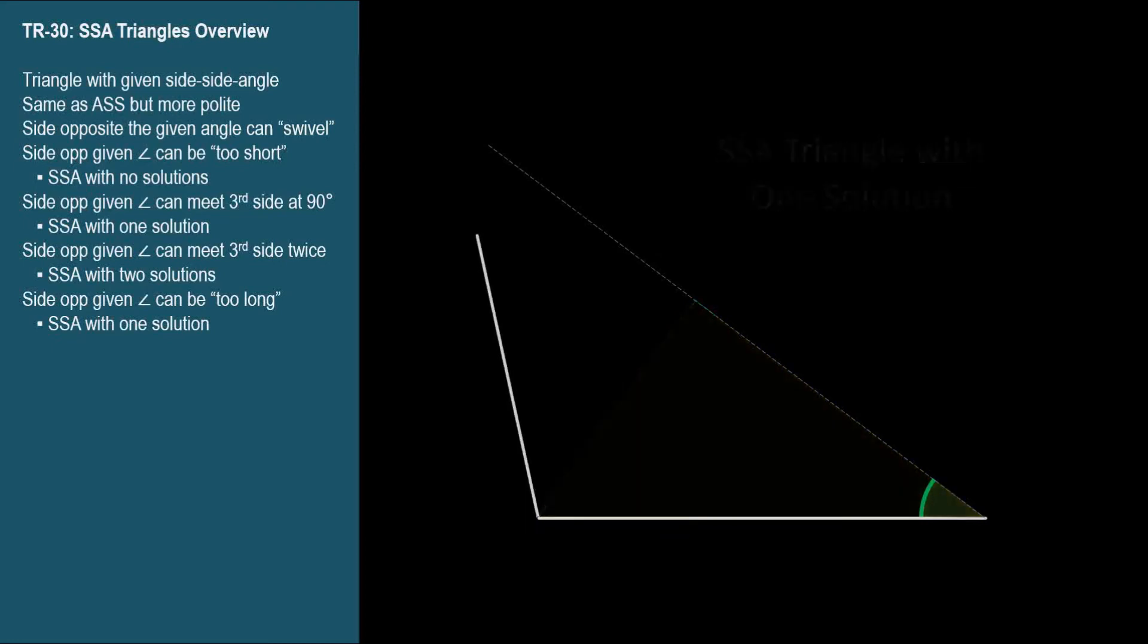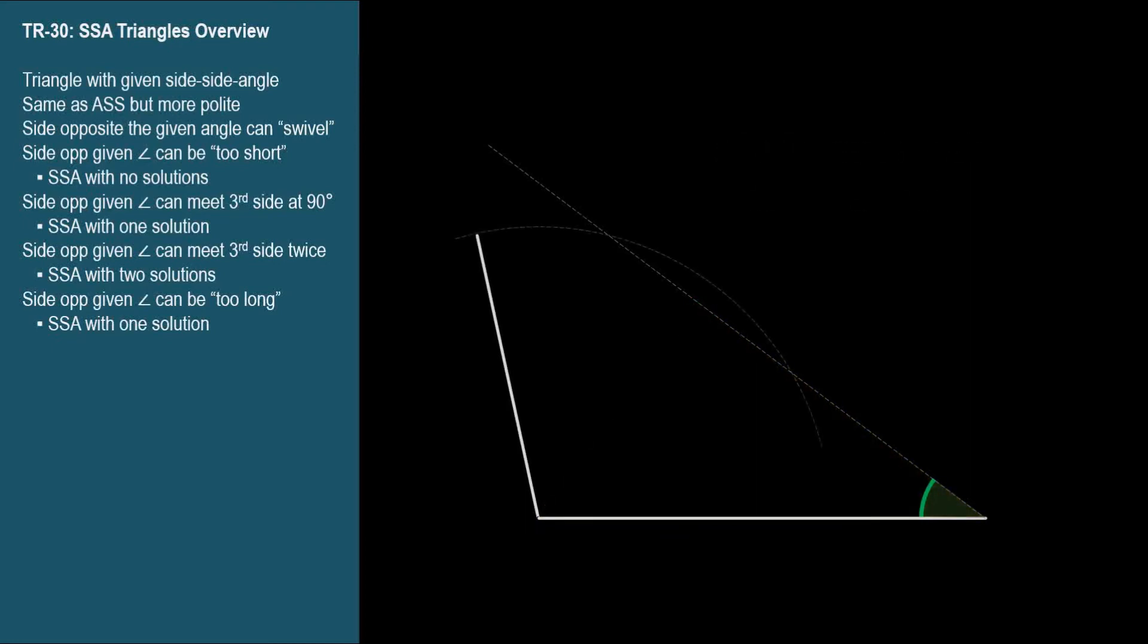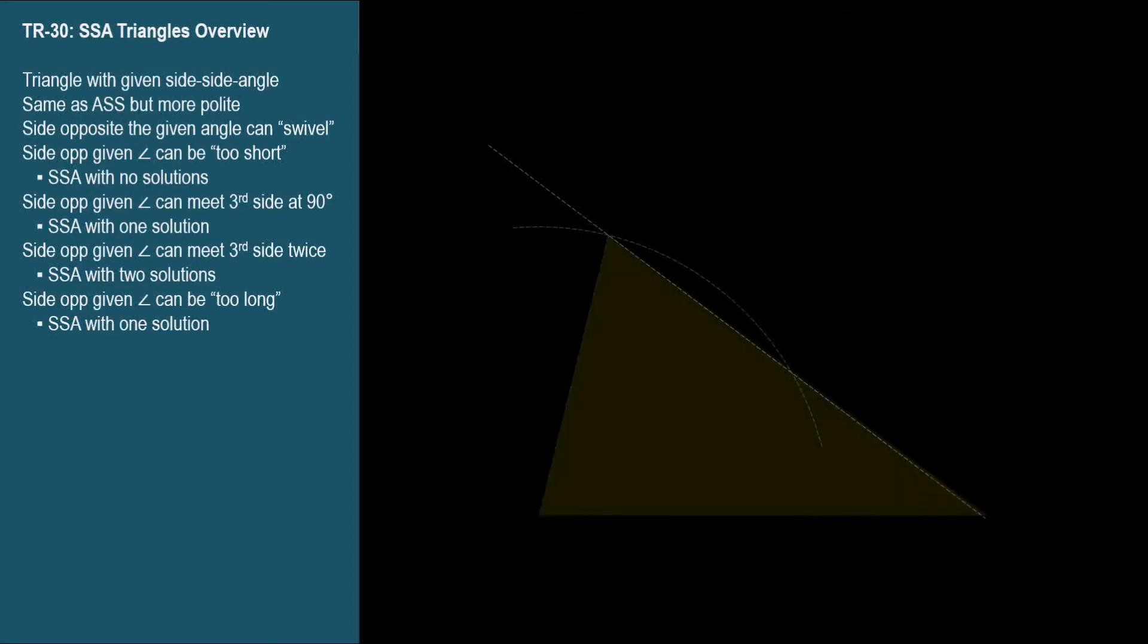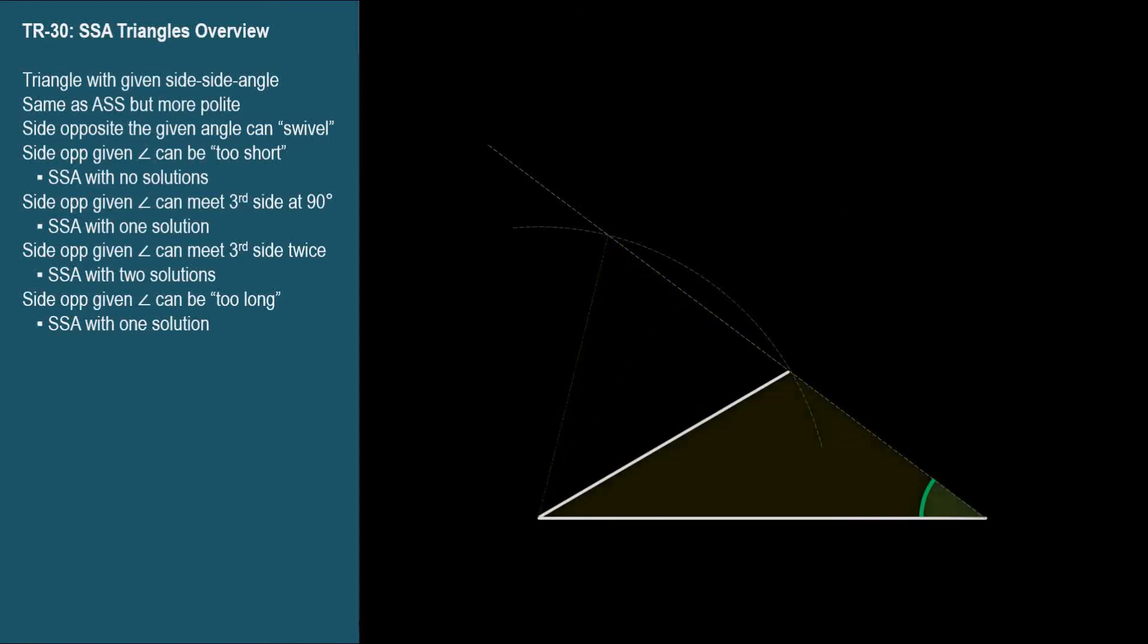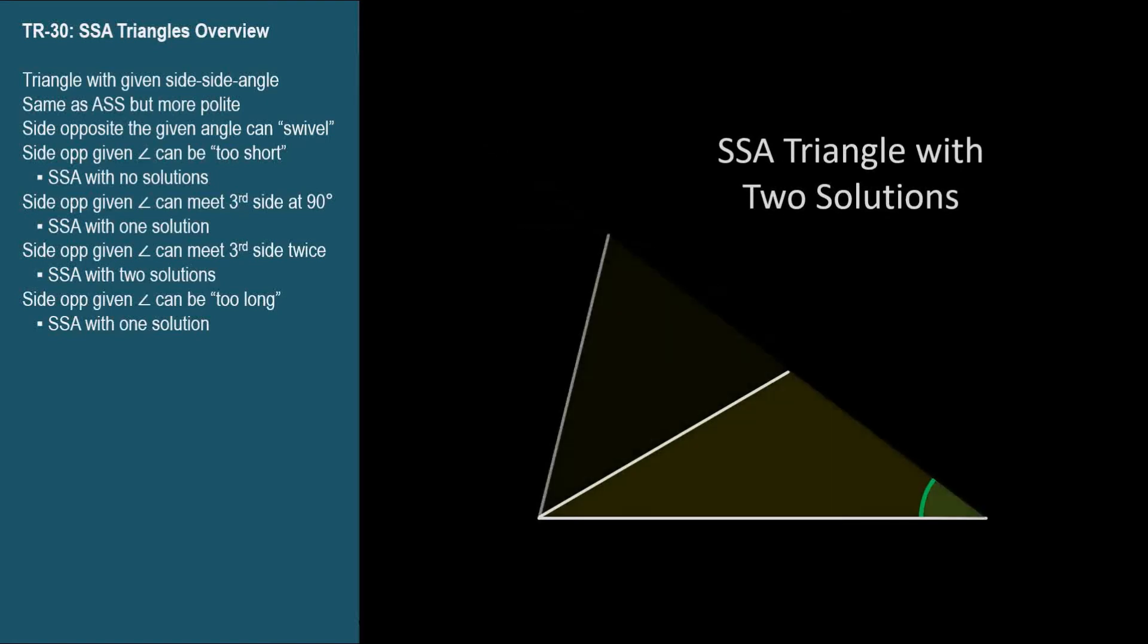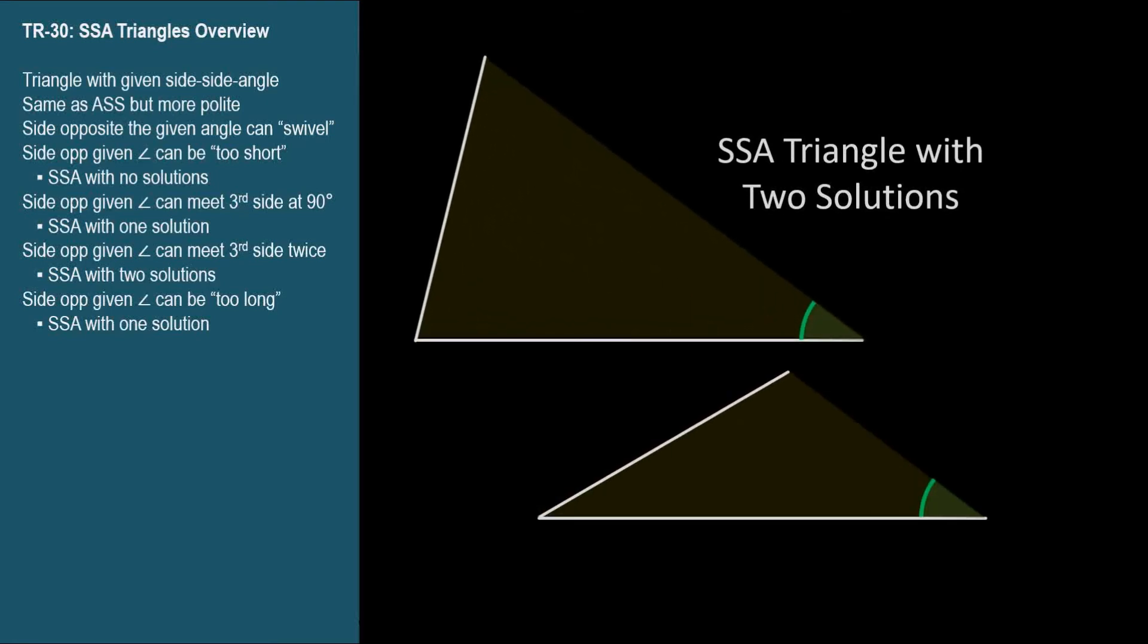If we let the swivel side get a little longer again, we reach a situation where it reaches the third side in two places. This means there are two triangles that have the given side-side angle configuration. They both have the same base side and angle, and the swiveling side can form a triangle two ways. So we have an SSA triangle with two solutions.